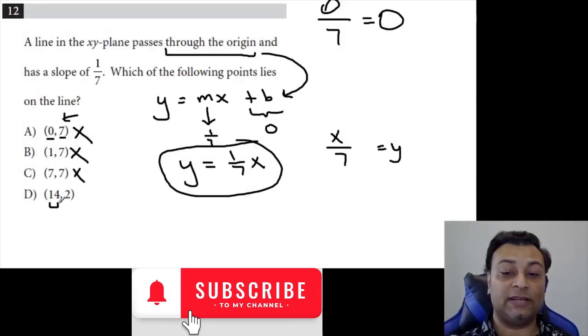But 14 divided by 7 is indeed 2. All we need is the x-coordinate to be seven times as big as the y-coordinate. If you see the x-coordinate seven times the size of the y-coordinate, that's the answer. And so we have 14, 2, where you can see that 2 is 1/7 times 14. It's the only one that fits.